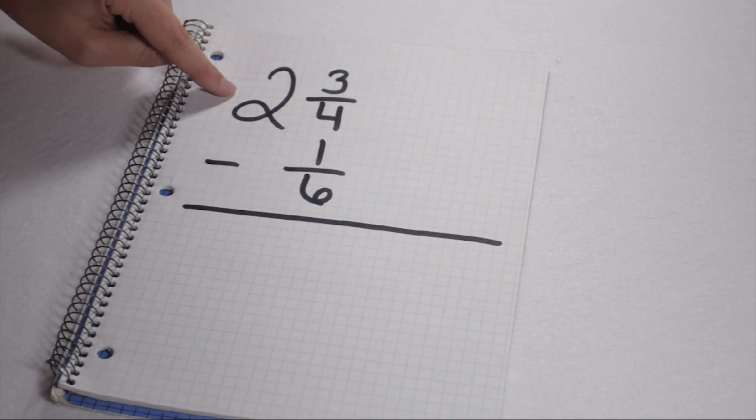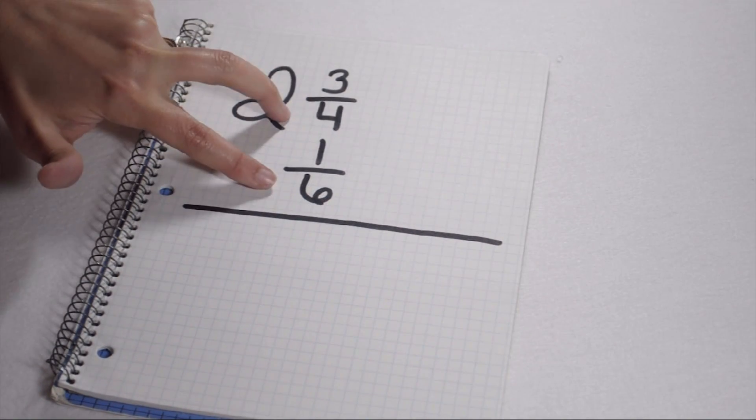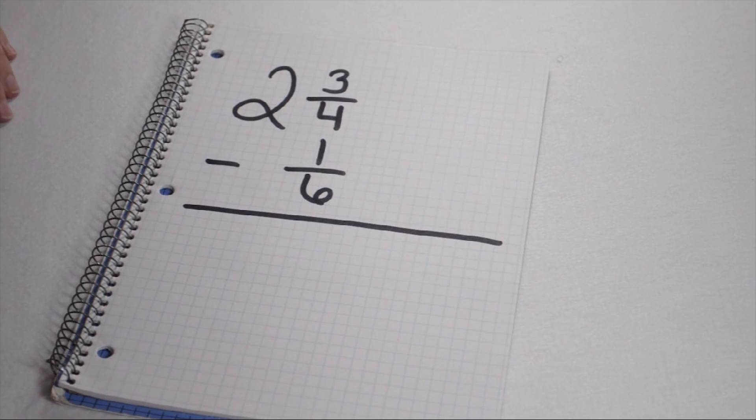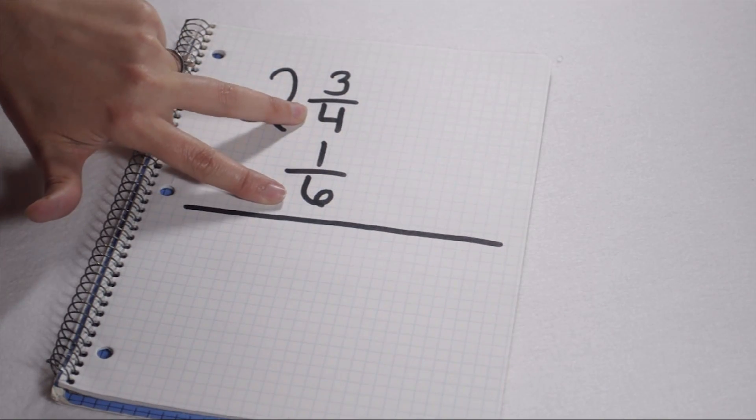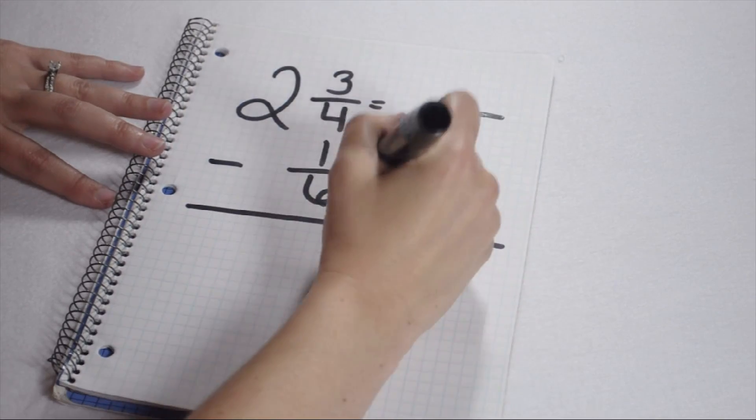We're subtracting 2 and 3 fourths minus 1 sixth. The first thing we notice about 4 and 6 is that they don't have a common denominator. When I find the least common multiple of 4 and 6, that comes out to be 12.